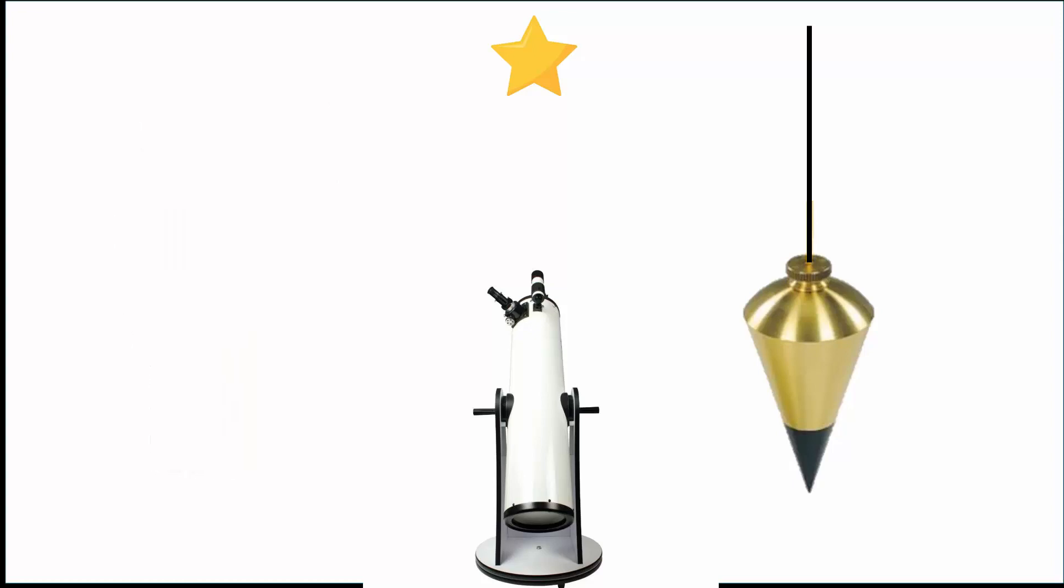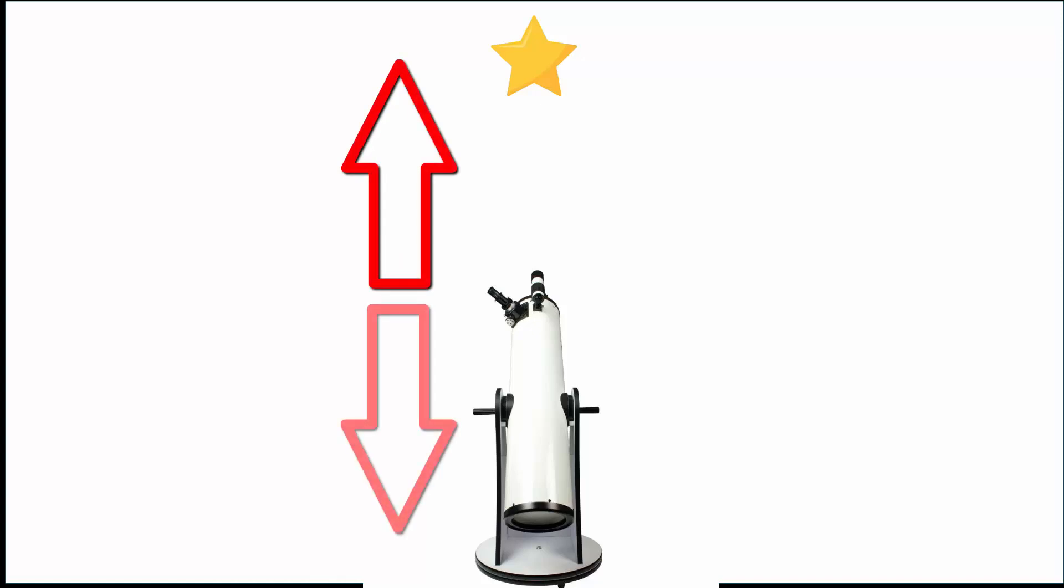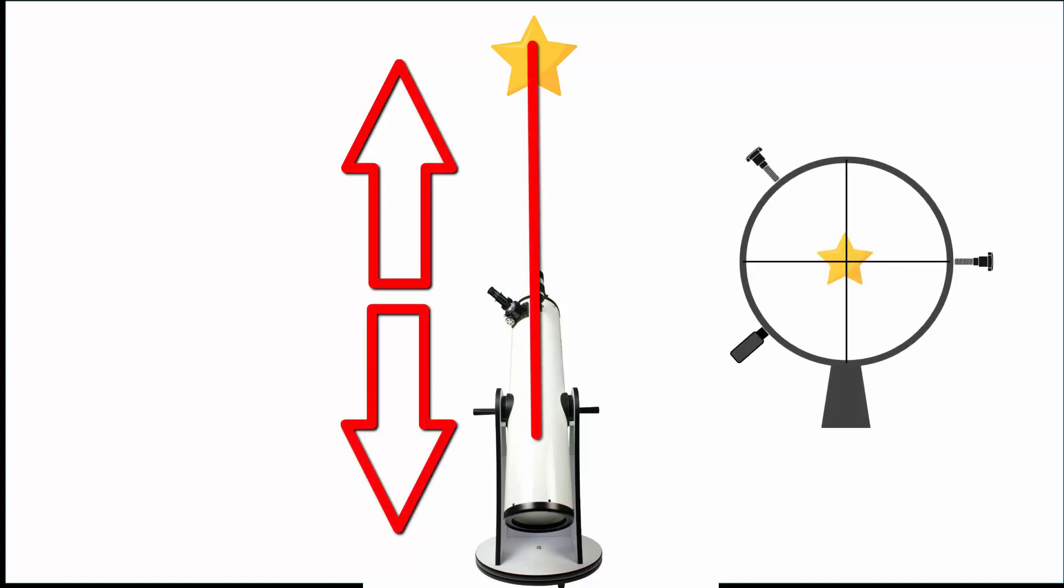The advantage of the plumb bob technique is that it lets you initially find the target in the finder scope by just moving the telescope up and down to bring the target into the finder scope's field of view. The moment you start needing to also search left and right as well as up and down, frustration and lost time starts to mount.